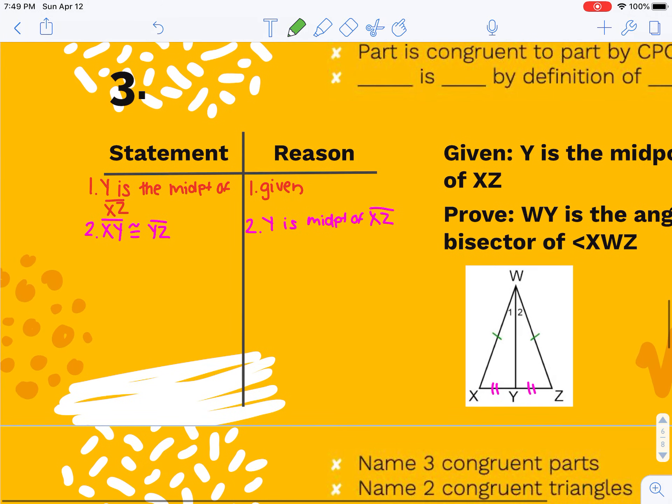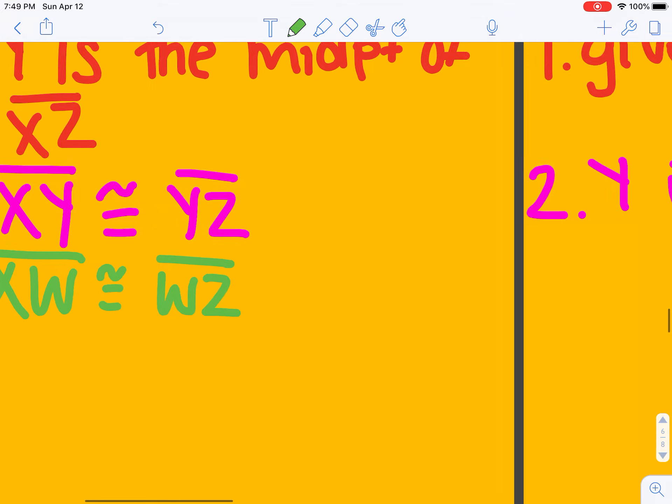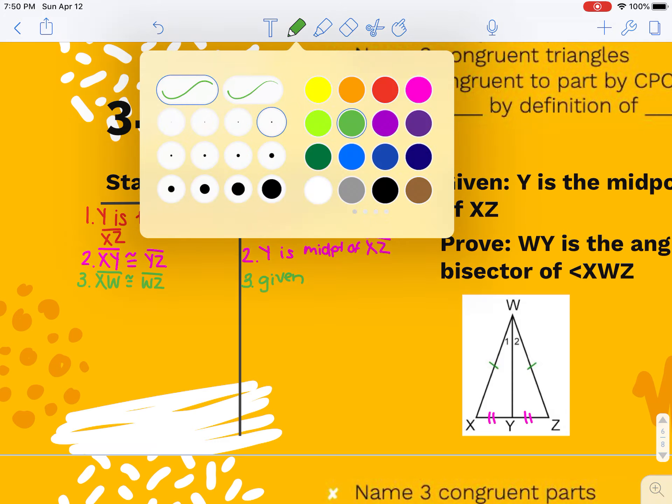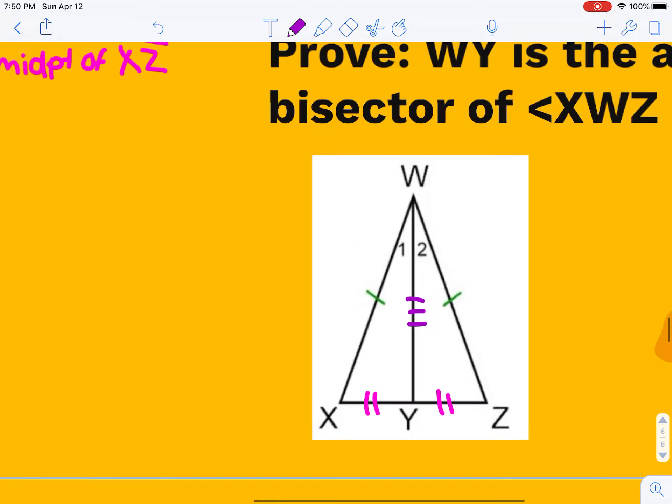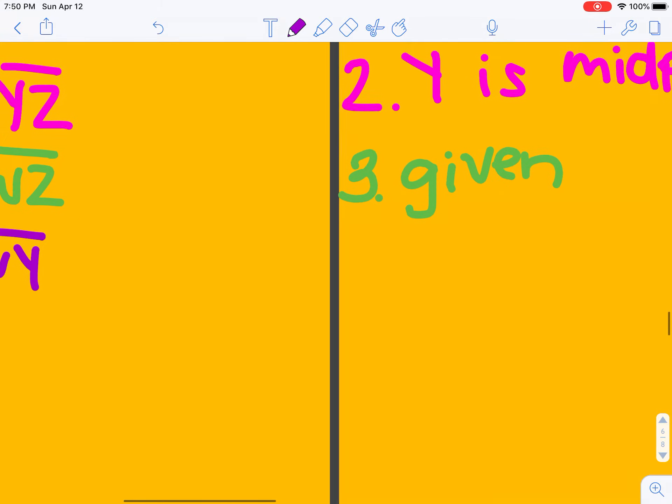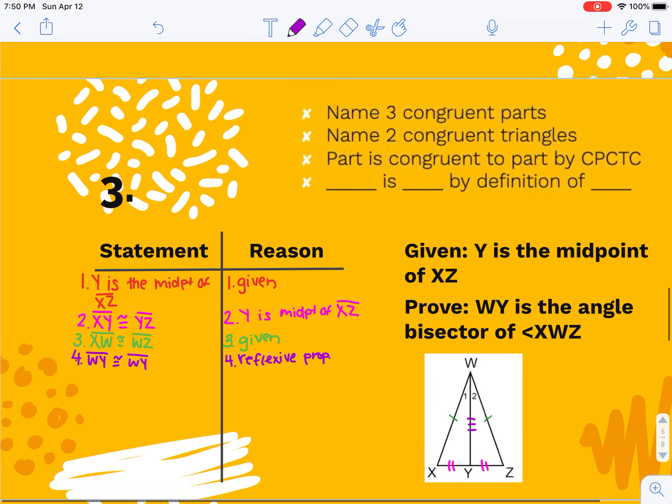Then I'm going to use XW congruent to WZ because that's marked congruent for me. It was marked in my picture, so that counts as given. And then when I look at this picture, I can get WY congruent to itself by the reflexive property. And if you want to write same side instead, that's okay. All right, so I've found three congruent parts. I have steps two, three, and four, all are congruent parts. So now I'm going to say my triangles are congruent.